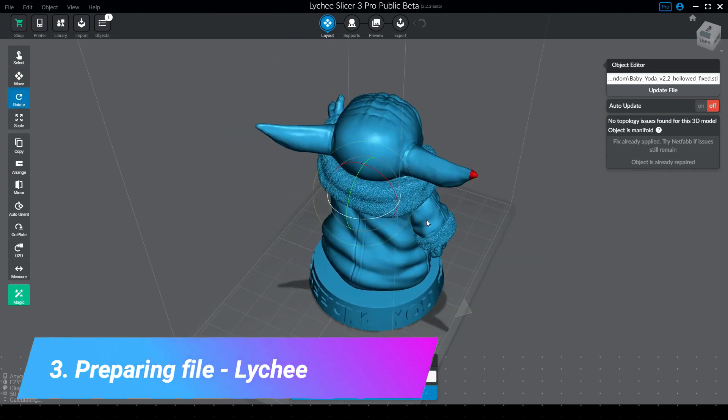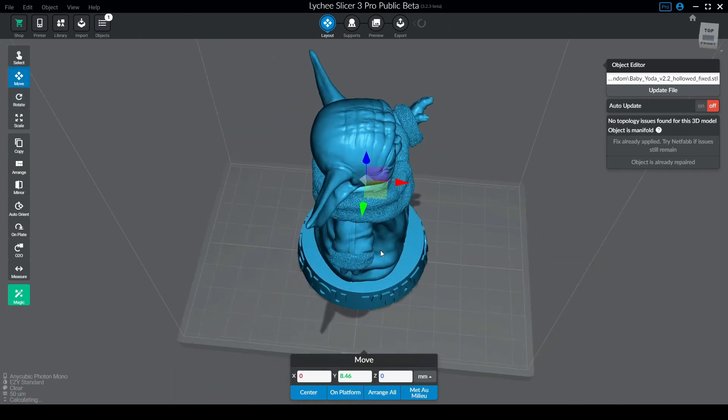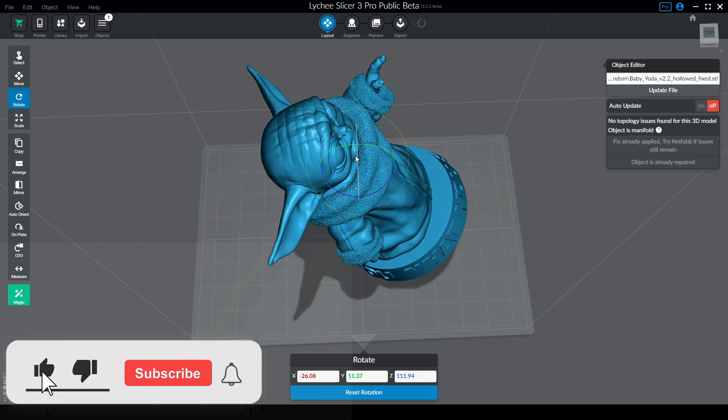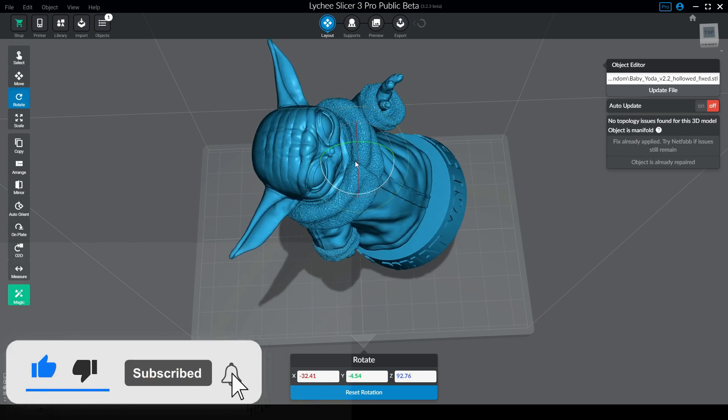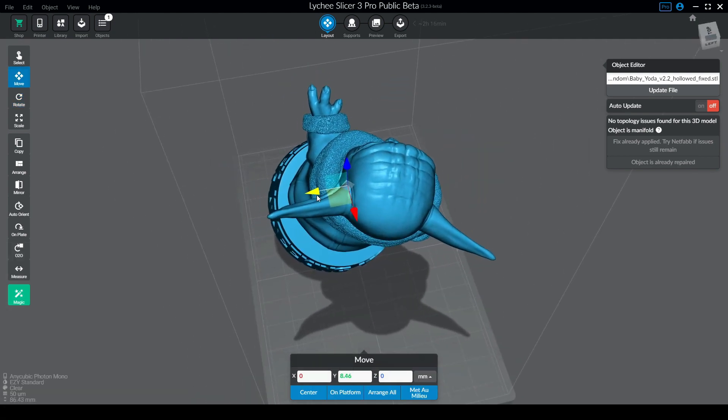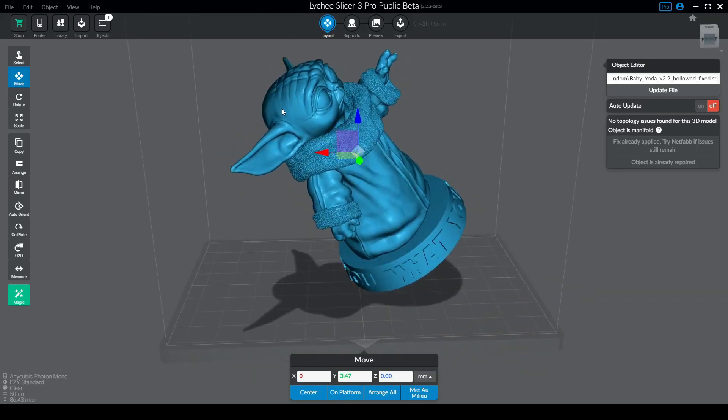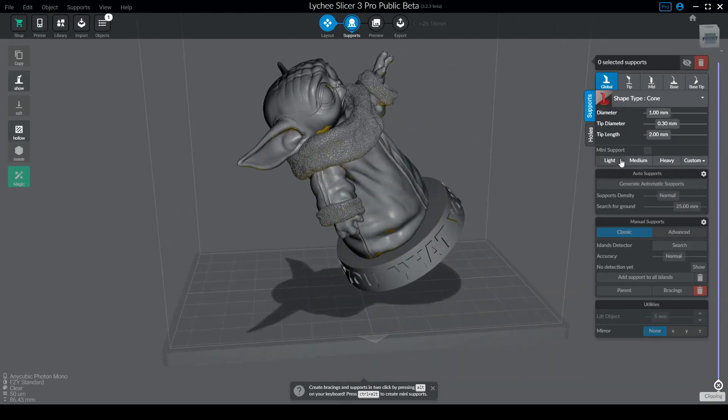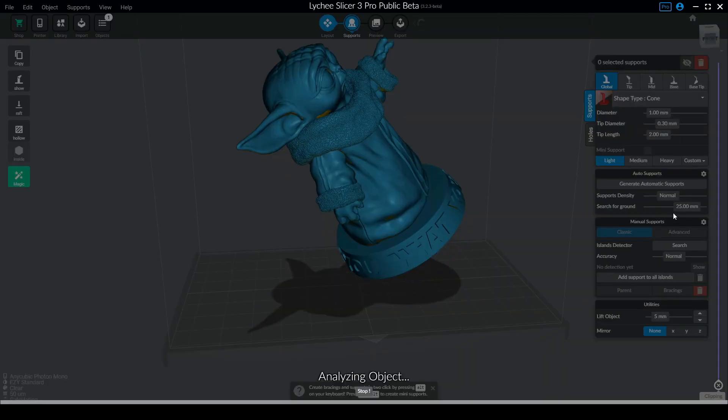Now we have our model hollowed, and it's time to open it on the slicer, support the model and slice it. I'm not a professional support specialist, I'm doing supports more like any regular hobbyist will do. Placing supports is something you get better over time, and there are other specialists on YouTube that know that much better than me.